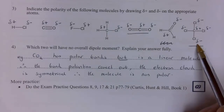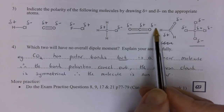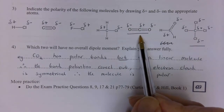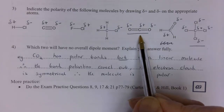I'm going to use carbon dioxide as my example. Carbon dioxide has polar bonds because there's a big electronegativity difference between the carbon and the oxygen, but the molecule overall is linear and therefore the bond polarities cancel out. Therefore the electron cloud is symmetrical and the molecule overall is non-polar.